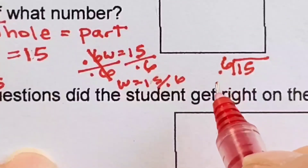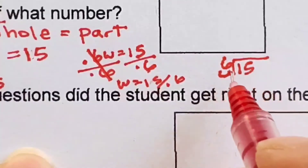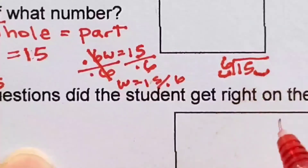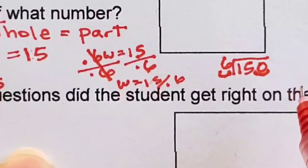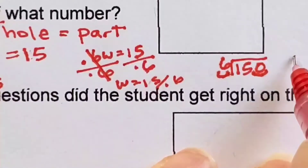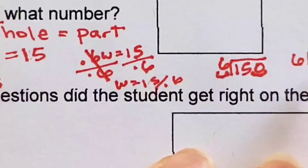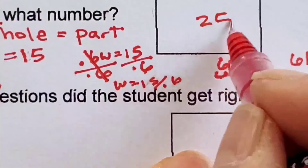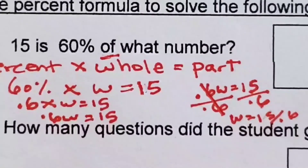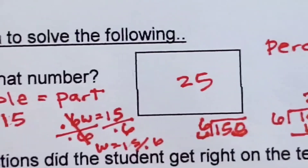I can't have a decimal in my divisor, so I'm going to move it over 1 to give me a whole number of 6, but I have to move another place value and put in 150. 6 goes into 15 two times. 6 goes into 30 five times. So 15 is 60% of 25.